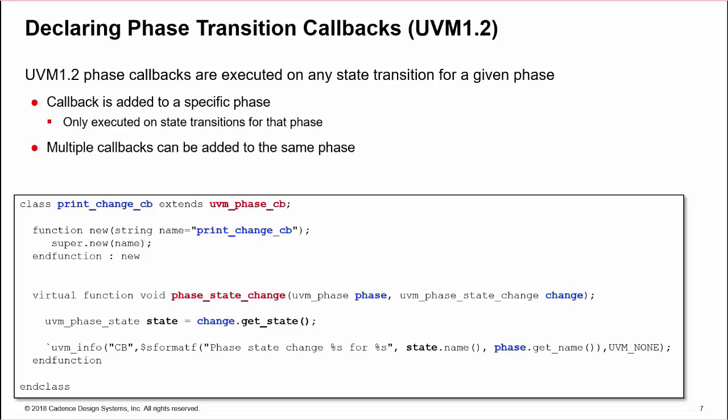UVM 1.2 adds phase transition callbacks, which are executed on any state transition for a given phase. The callback must be declared, instantiated, and added to a specific phase to be executed. An advantage of callbacks is that multiple callback instances can be added to the same phase, and callbacks can be dynamically added, removed, and reordered for the phase.